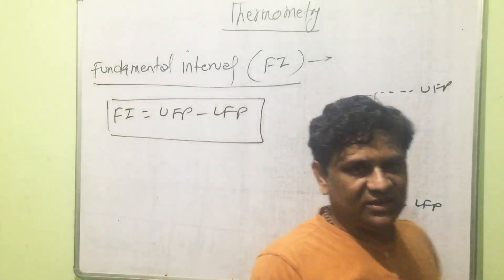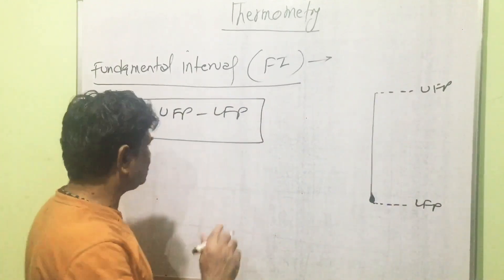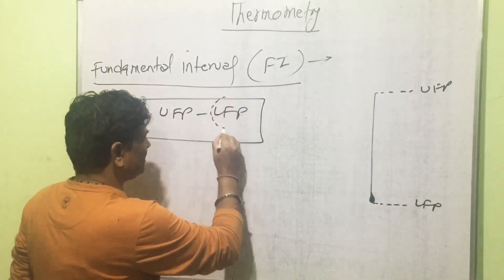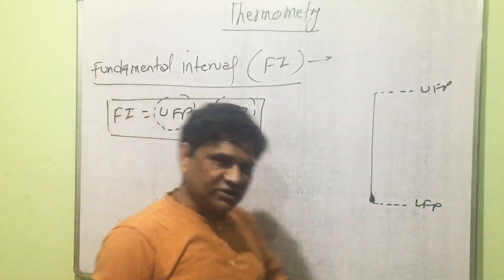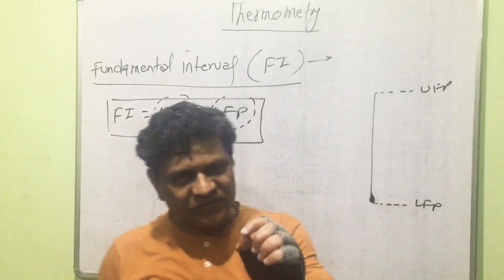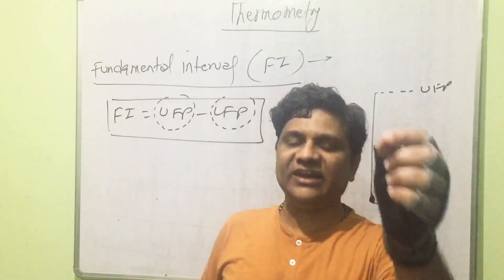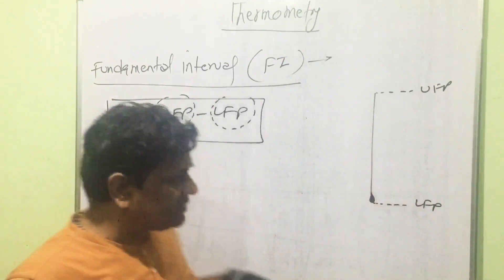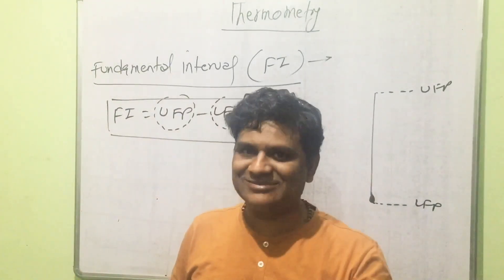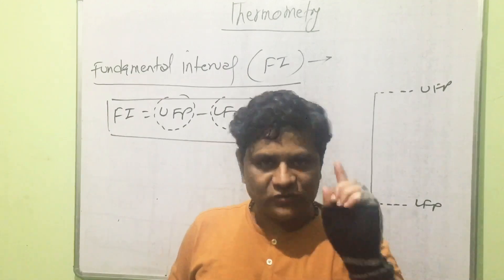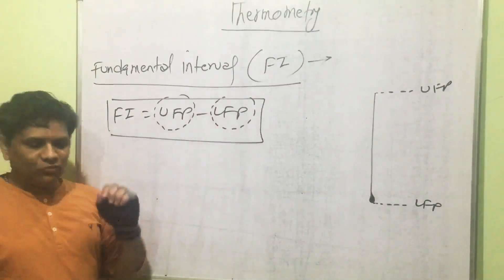Now, what is the meaning of lower fixed point and upper fixed point? The lower fixed point is the temperature at which pure ice melts at atmospheric pressure. The upper fixed point is the temperature at which pure water boils at atmospheric pressure. So fundamental interval equals upper fixed point minus lower fixed point.